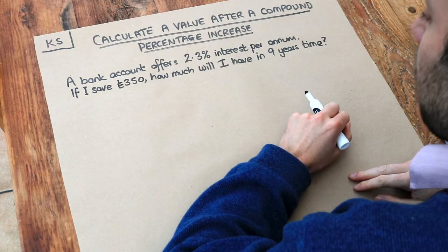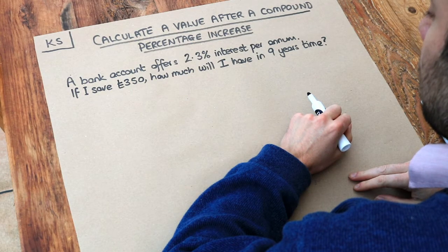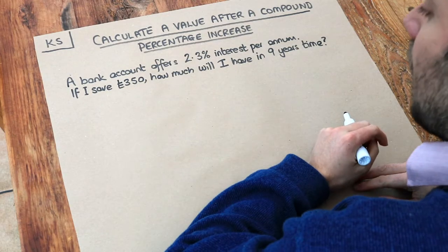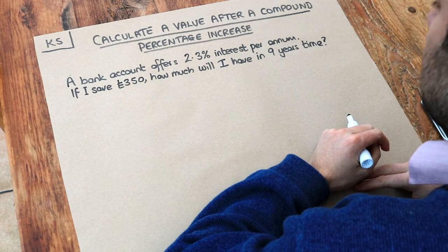A bank account offers 2.3% interest per annum. I'll explain what that means in a second. If I save £350, how much will I have in nine years' time?